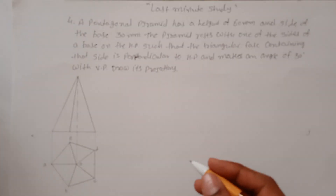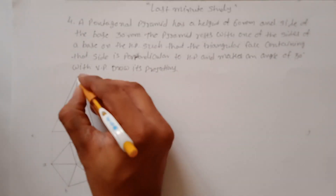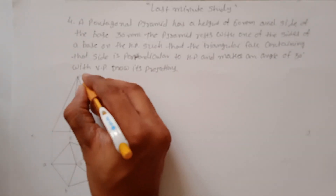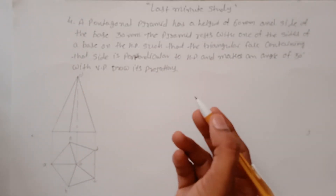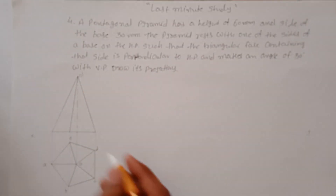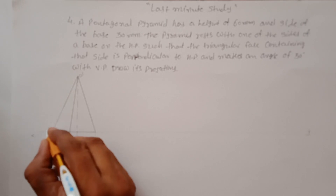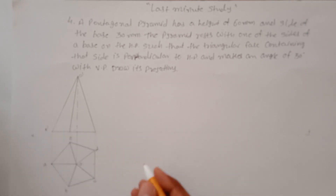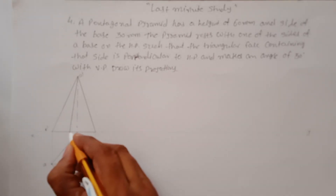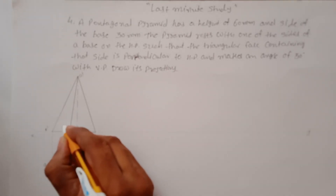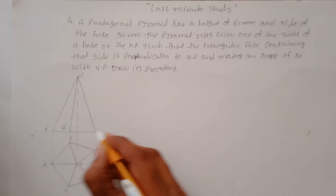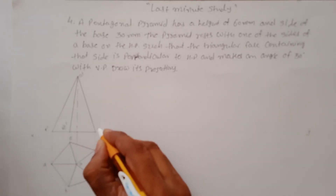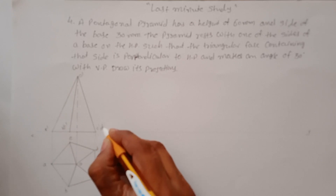Now give names to them. This point is O-dash, this point is A-dash, this is B-dash, E-dash, and C-dash, D-dash.